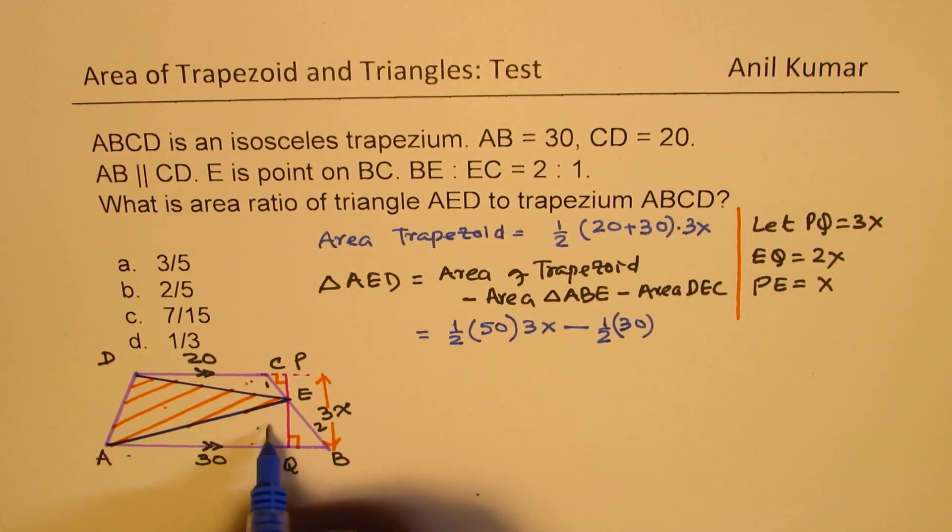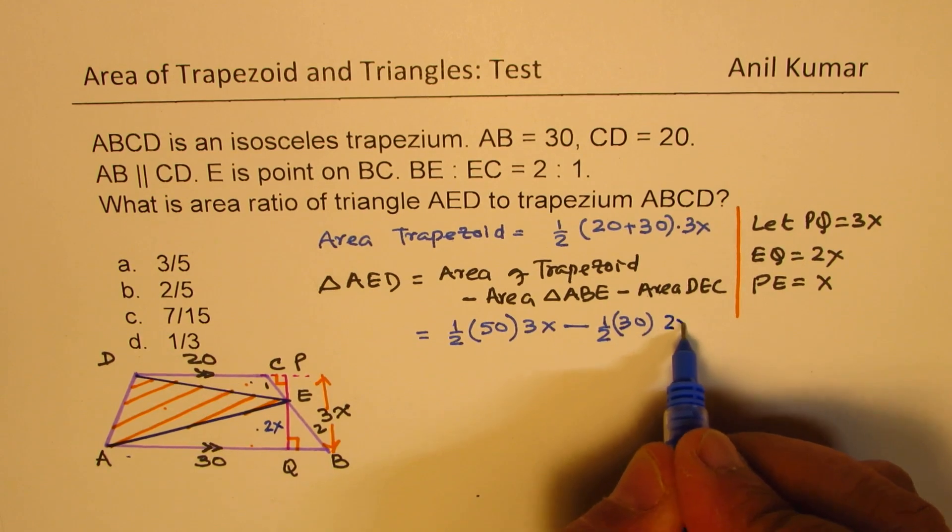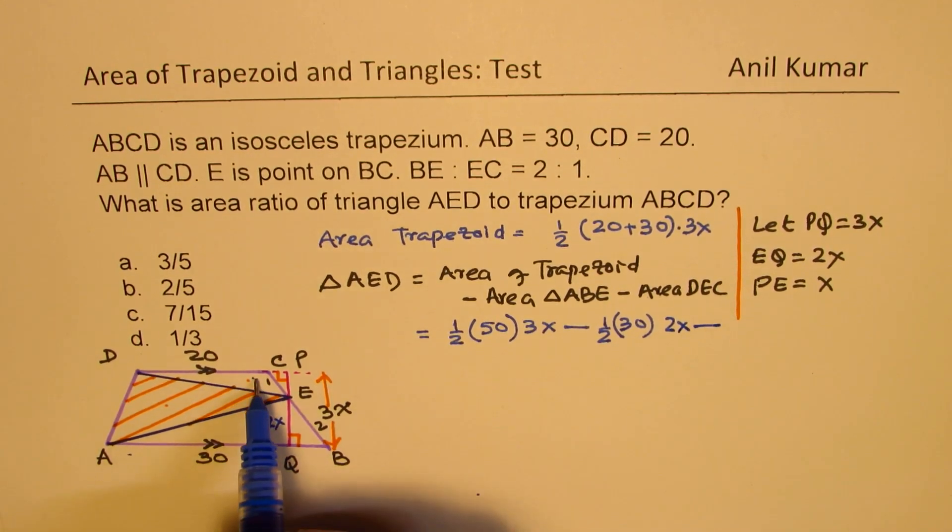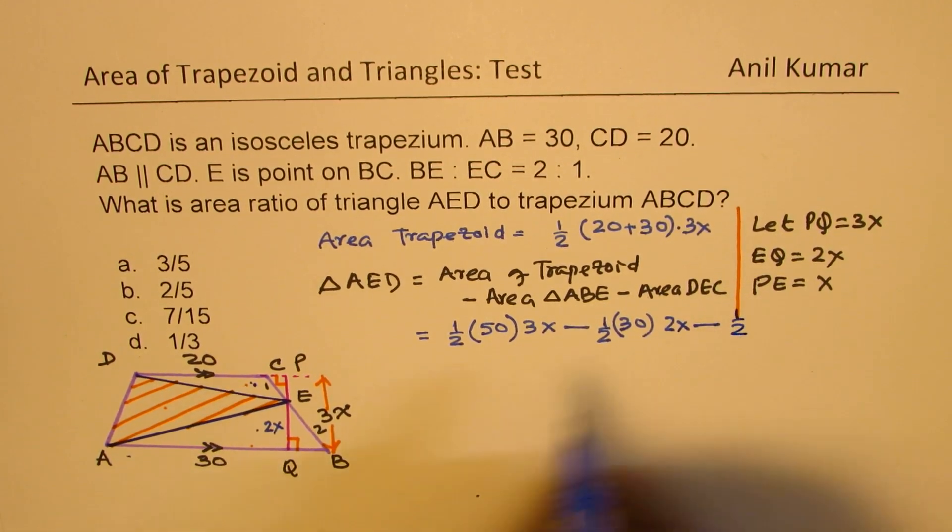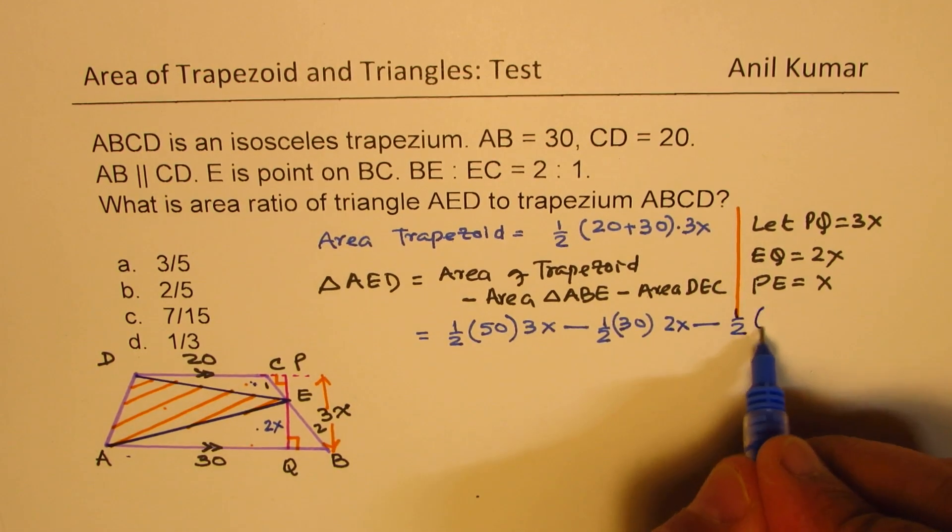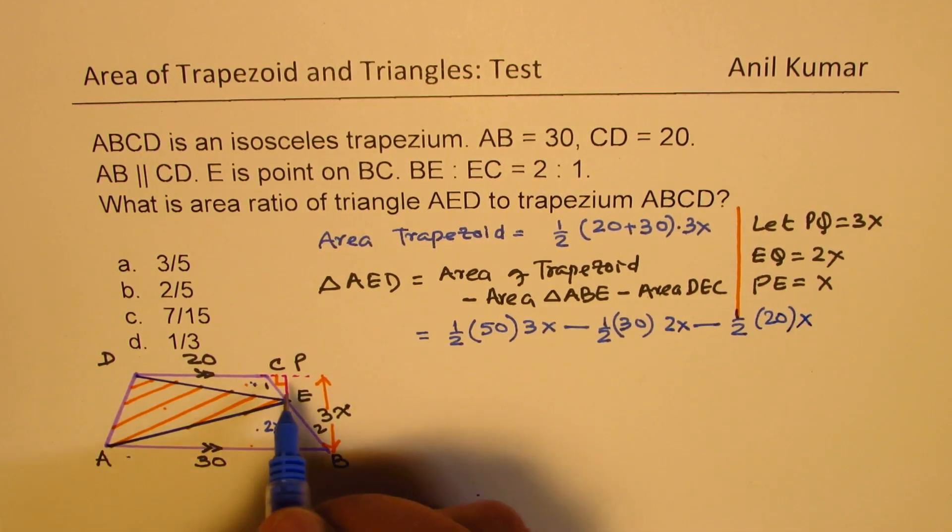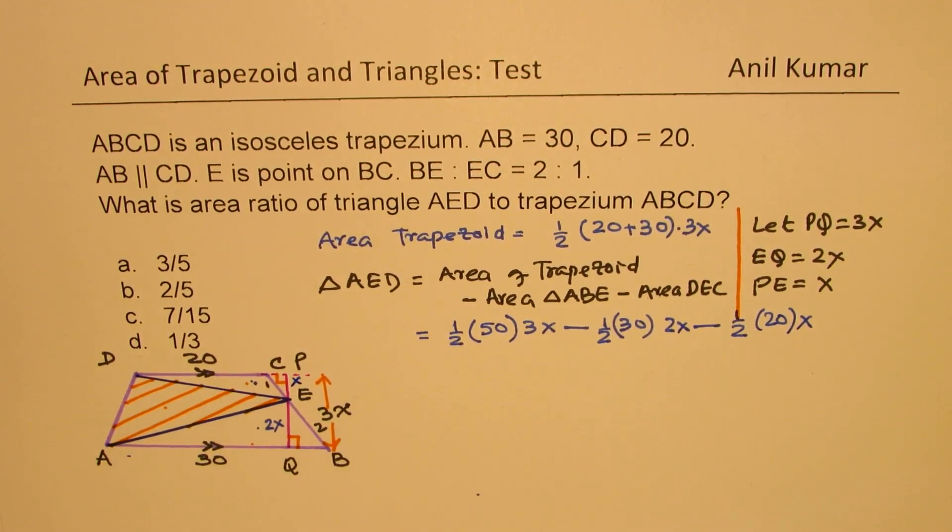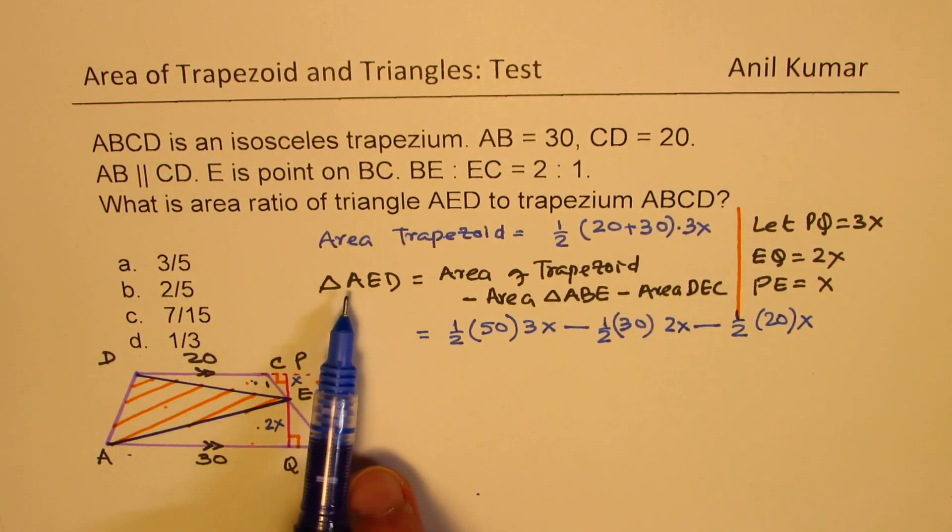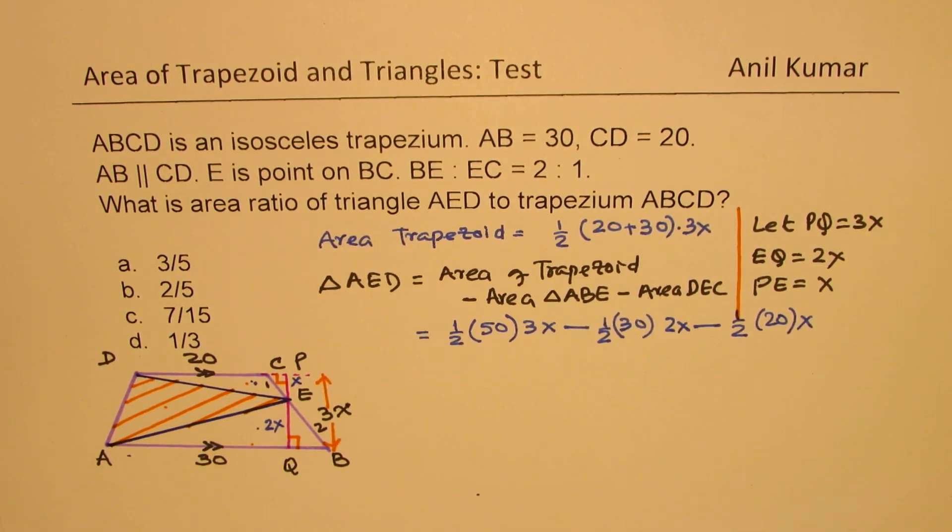This height will be 2X minus area of this small triangle, which is half of 20, the other side length times X. So this side will be X. So that becomes the triangle AD area.